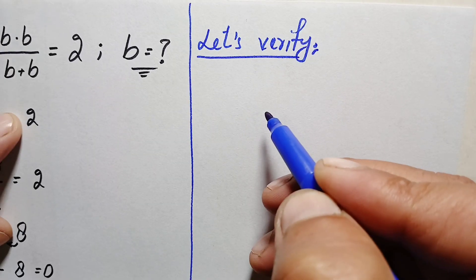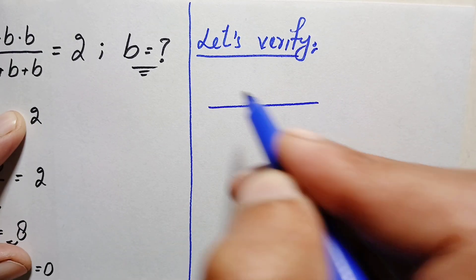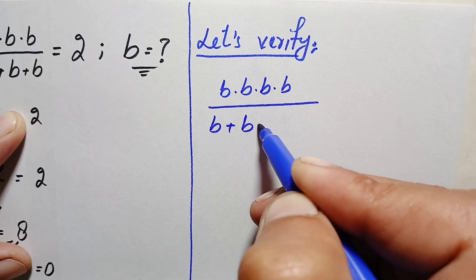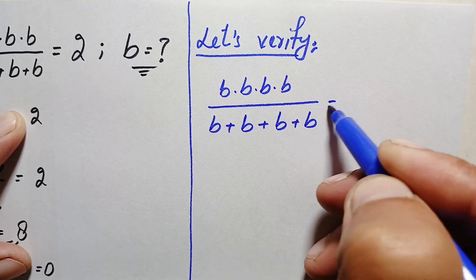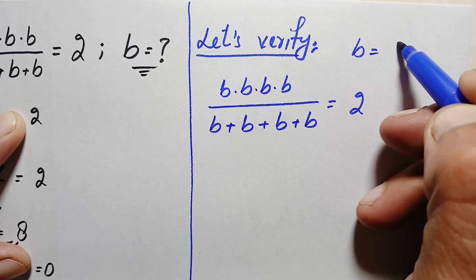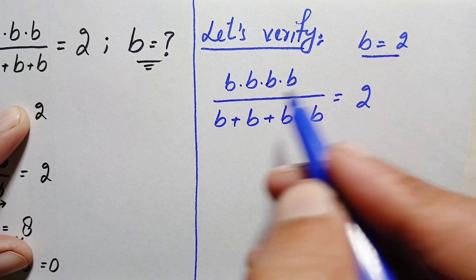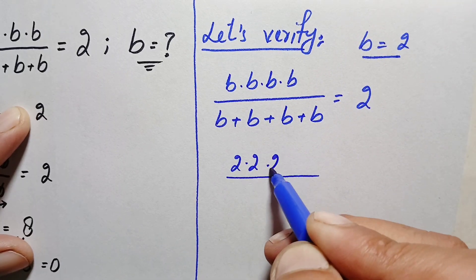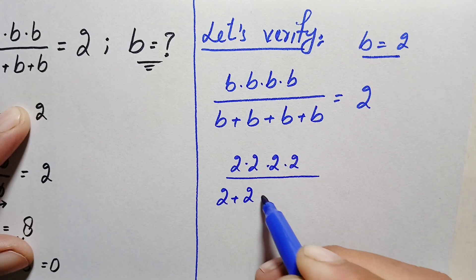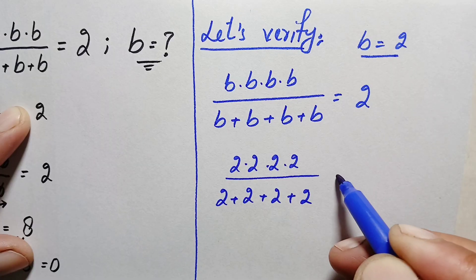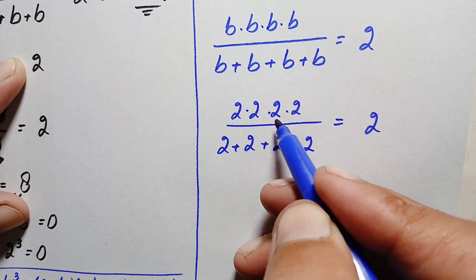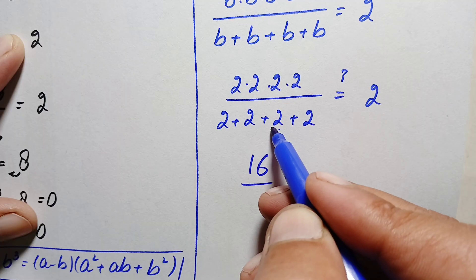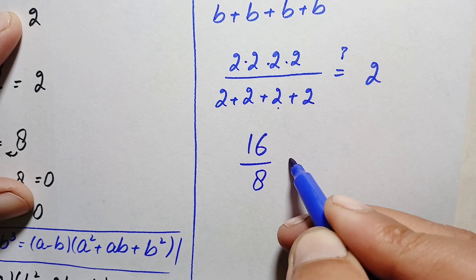To verify, we write the original problem: b times b times b times b, divided by b plus b plus b plus b, equals 2. Substituting b equals 2: the numerator is 2 times 2 times 2 times 2, and the denominator is 2 plus 2 plus 2 plus 2. The numerator gives 4, then 8, then 16. The denominator gives 4, then 6, then 8. So we get 16 divided by 8, which equals 2.